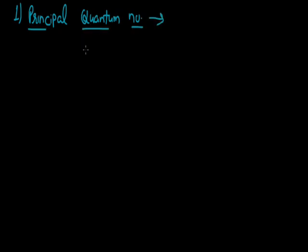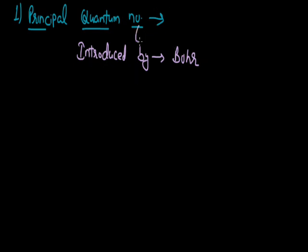We will start with the principal quantum number. This principal quantum number was very first introduced by Niels Bohr in his atomic model, so the credit for its introduction is given to Niels Bohr. To denote this principal quantum number in short, we use the symbol N. The range for this principal quantum number is from 1 to infinite — the minimum value is 1 while the maximum value is infinite. This principal quantum number helps us to identify the name, size, and energy of any shell.